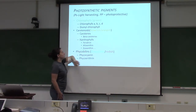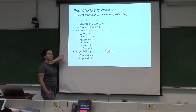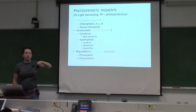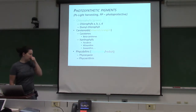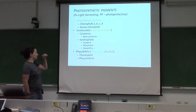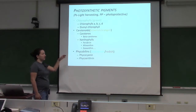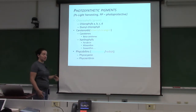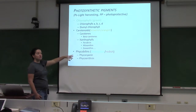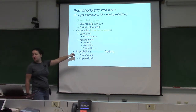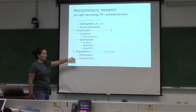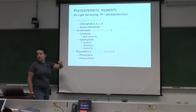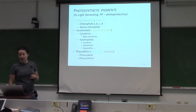Then there are phycobillins — pigments mostly associated with cyanobacteria. They're actually protein-type pigments. These are really cool; they helped us detect Synechococcus and Prochlorococcus. They fluoresce and are really dominant inside the bacterial world.